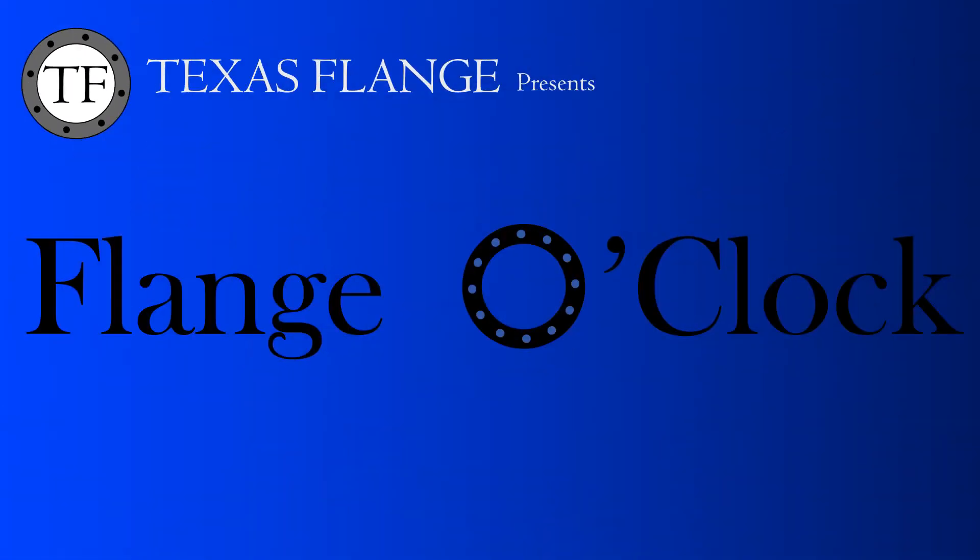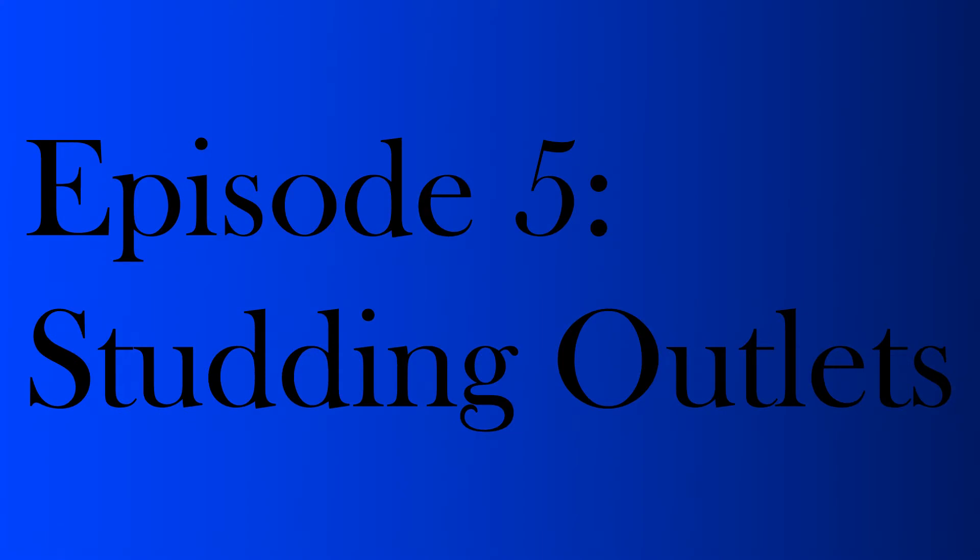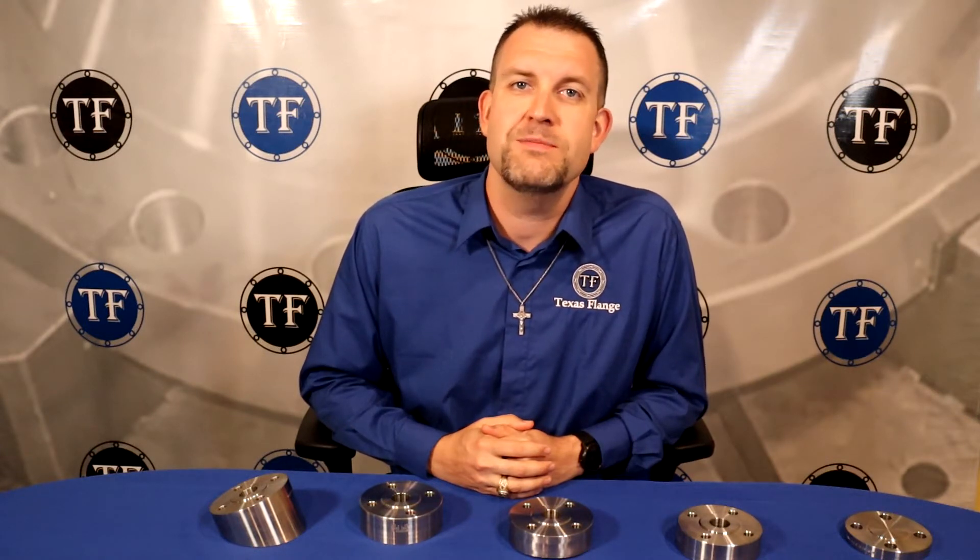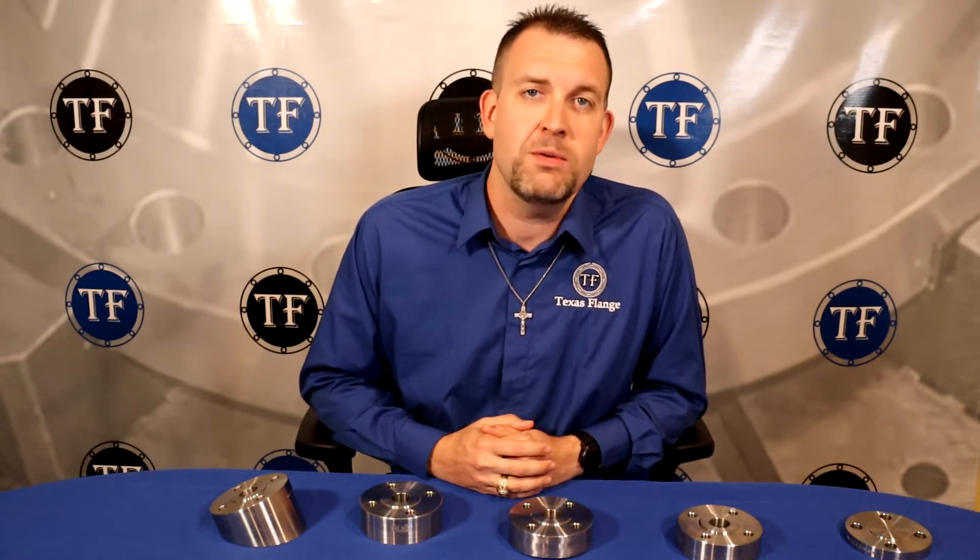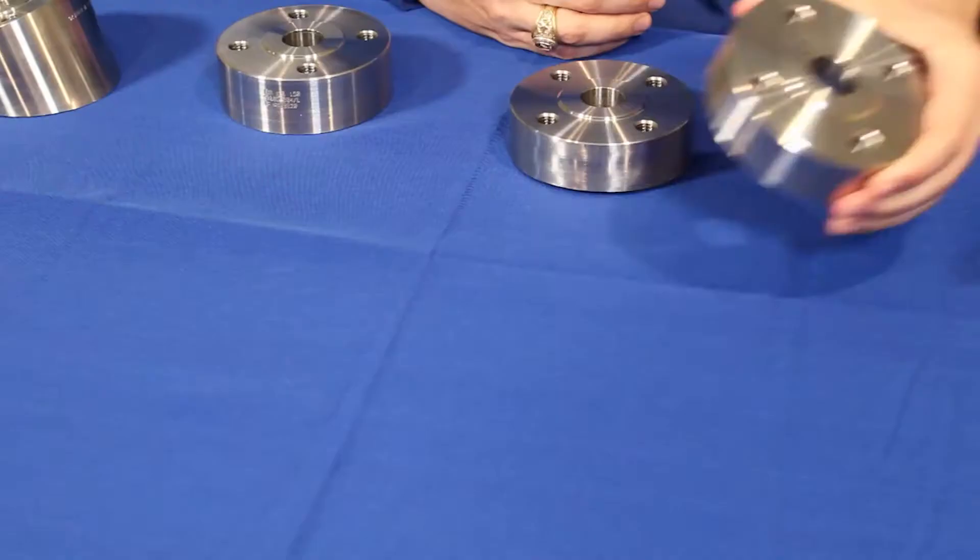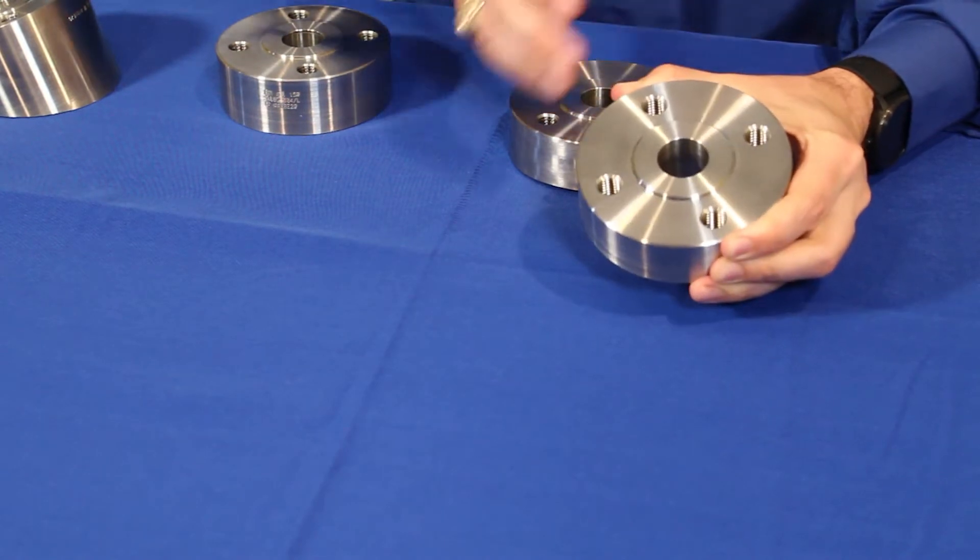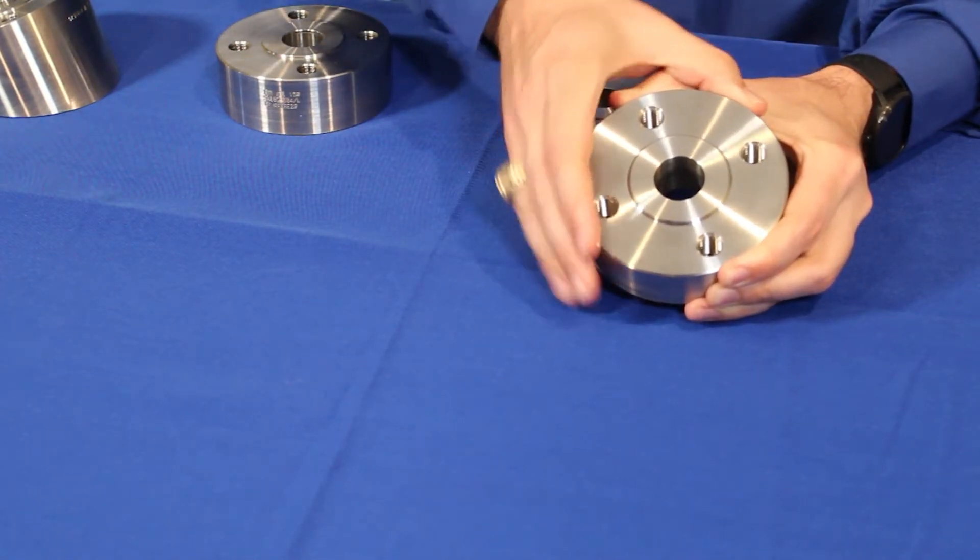Hello and welcome back to Flange O'Clock. Today we're discussing stud outlets or pad flanges. The stud outlet is mounted directly onto the OD or sometimes the ID of your pipe or vessel. It has a facing, either raised face, flat face, or RTJ, that interacts with the face of the flange you're wanting to bolt directly onto it.